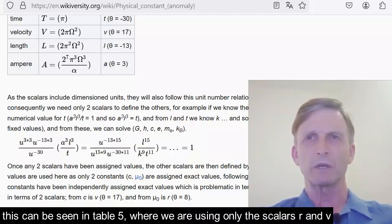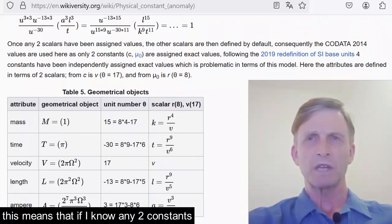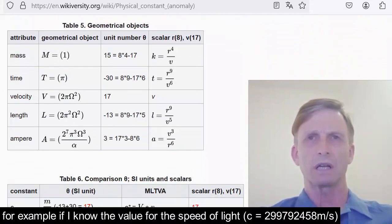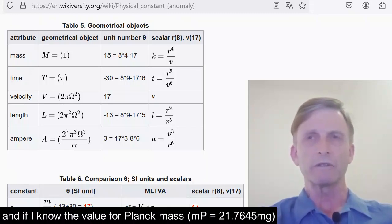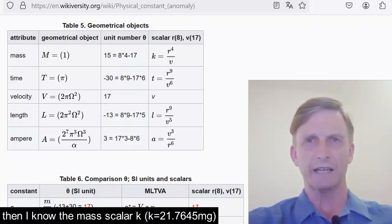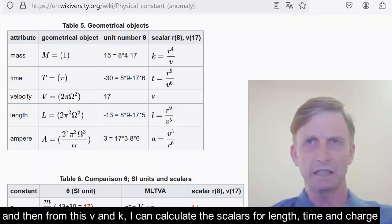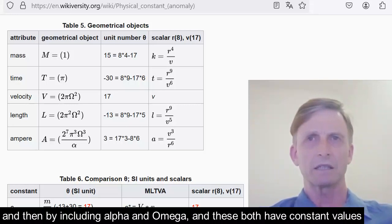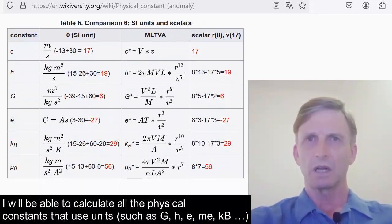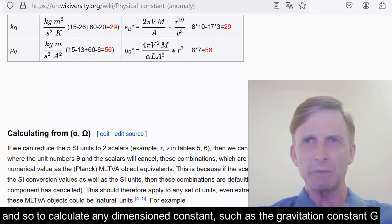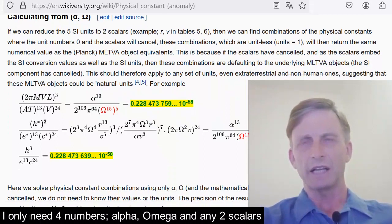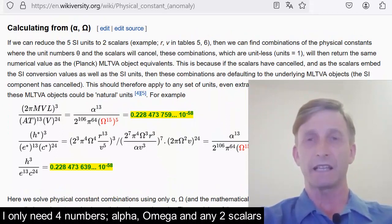This can be seen in table five, where we are using only the scalars R and V. This means that if I know any two constants, for example, if I know the value for the speed of light, then I know the velocity scalar V. And if I know the value for Planck mass, then I know the mass scalar K. And then from this V and K, I can calculate the scalars for length, time, and charge. And then by including alpha and omega, and these both have constant values, I will be able to calculate all the physical constants that use units. And so to calculate any dimensional constant such as the gravitational constant G, I need only four numbers: alpha, omega, and any two scalars.